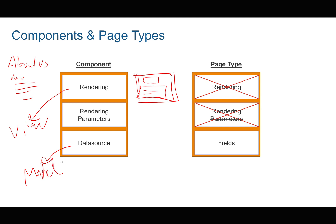Later on we're going to look at how we create such a component. Rendering parameters are usually things like your CSS class, your styles, maybe background color — anything that you don't really want to see with your data, but it's part of your component.